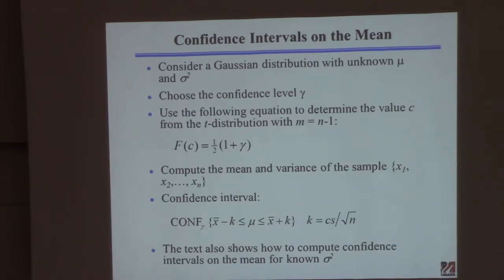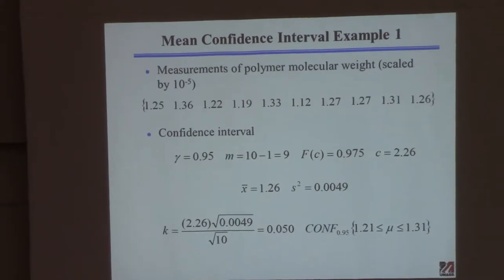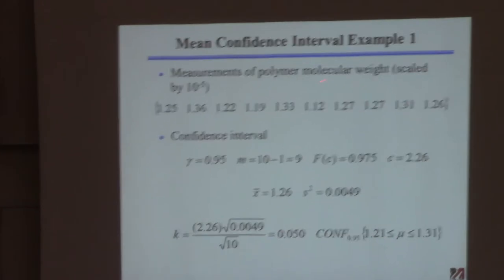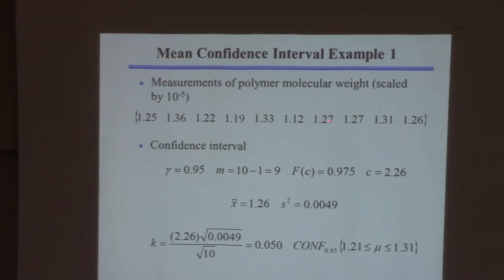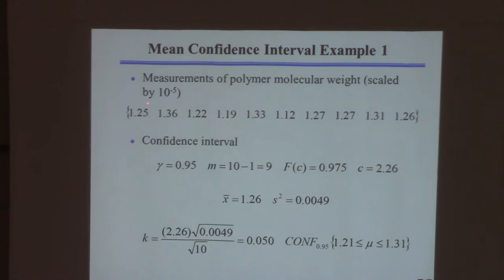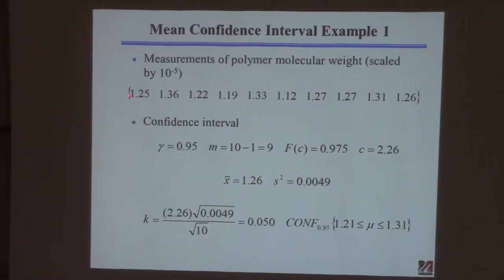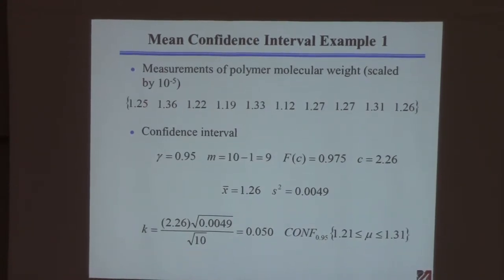Now I'll go through a little example. This is a polymer molecular weight problem: we're making a polymer, measuring the molecular weight, and we have 10 samples. One example value is 1.25 times 10 to the fifth grams per mole. We measured the molecular weight 10 times in 10 independent experiments and we want to calculate the mean.